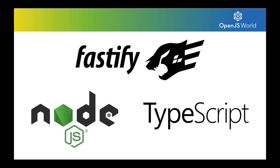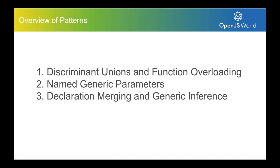Today's talk is going to be about Fastify and its new type definitions. Fastify is a Node.js web server framework. We are a part of the OpenJS Foundation and we are open sourced. Today we're going to be covering five patterns, but we're going to be doing so in three parts. The first part covers discriminant unions and function overloading, the second covers named generic parameters, and the third covers declaration merging and generic inference.